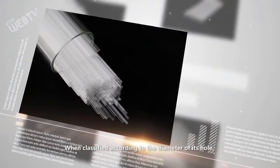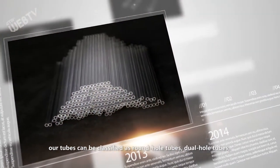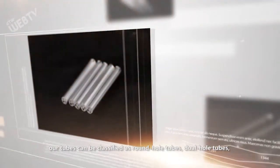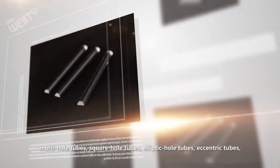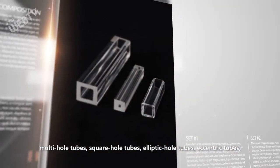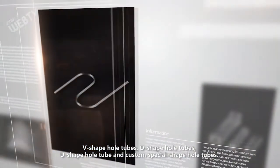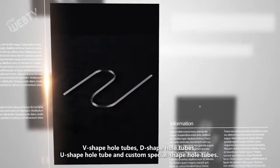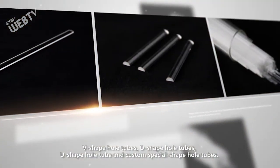When classified according to the diameter of its hole, our tubes can be classified as round hole tubes, dual hole tubes, multi-hole tubes, square hole tubes, elliptic hole tubes, eccentric tubes, V-shaped hole tubes, D-shaped hole tubes, U-shaped hole tubes, and custom special shaped hole tubes.